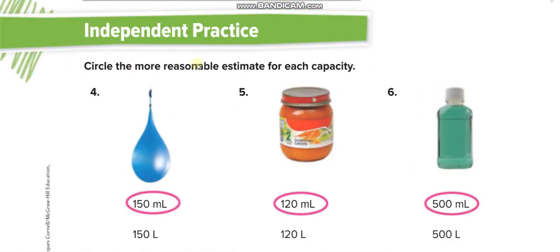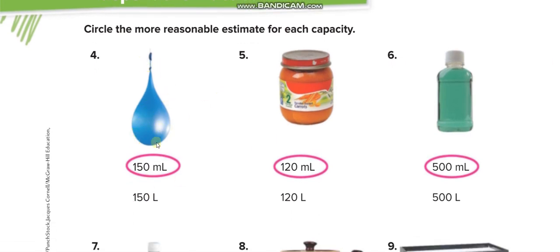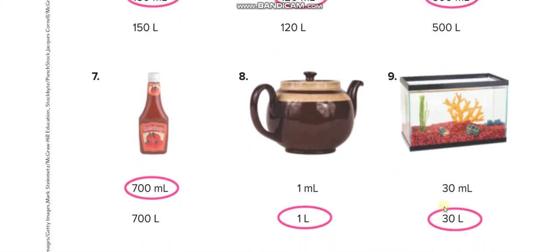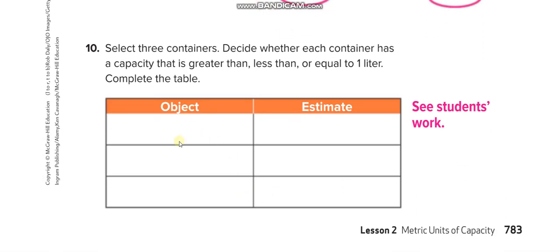Similarly, you have to circle the more reasonable estimate for each capacity from the given options. Like this water balloon: 100 milliliters only, because 150 liters means 150 bottles - huge. This is 120 milliliters, then this mouthwash 500 milliliters only. This one can be 30 liters, this one not one milliliter - one liter, and 700 milliliters.